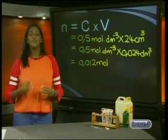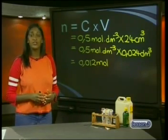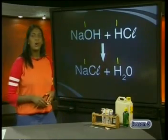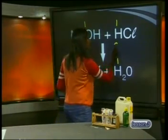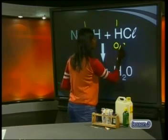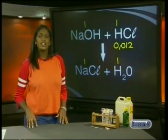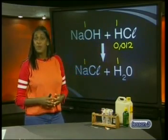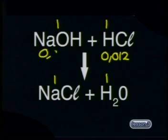Step 4: Use the ratio to find the number of moles of the unknown. We found the moles of acid to be 0.012 mol. So since the ratio is 1 to 1, the number of moles of alkali must also be 0.012 mol.